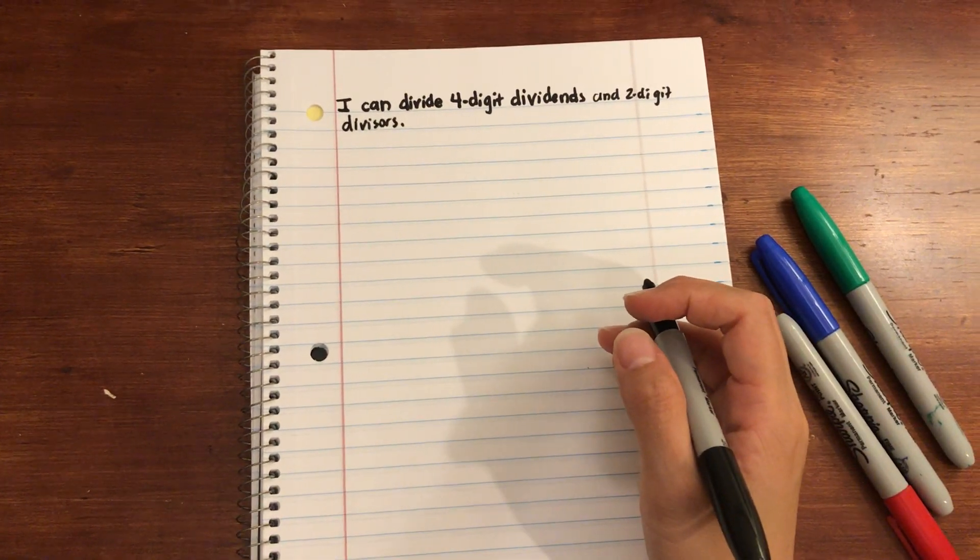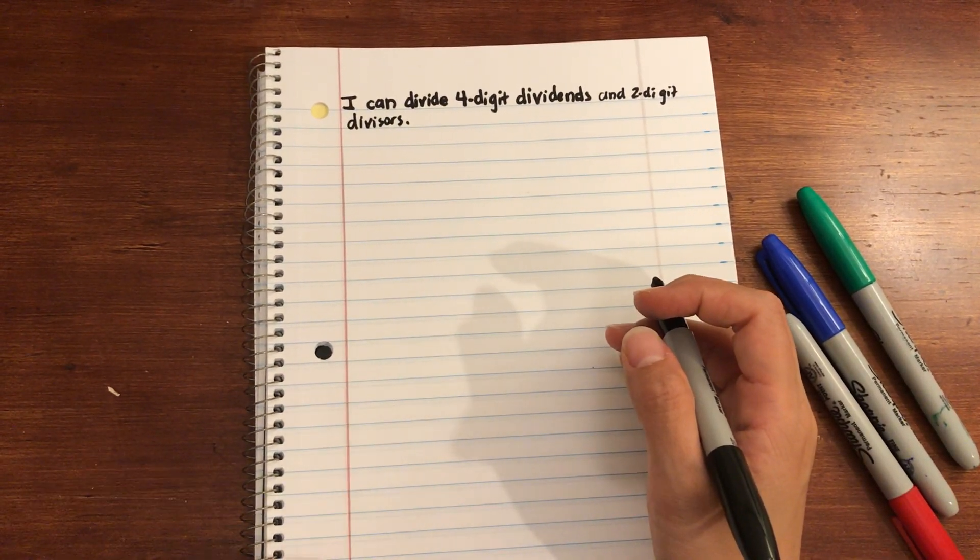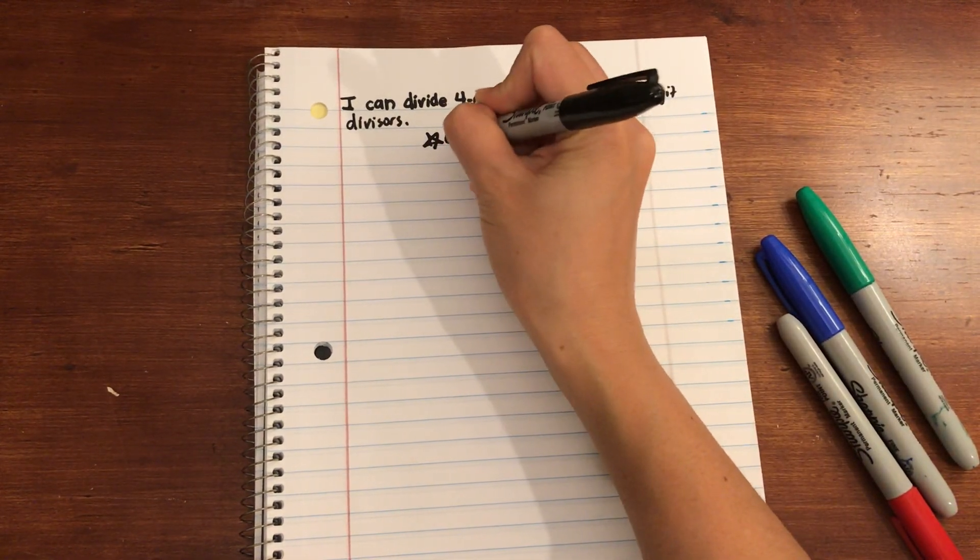All right, so the I CAN for today is I can divide four-digit dividends and two-digit divisors and we're going to only focus on the area model today.